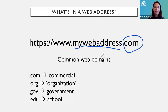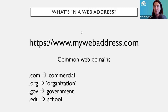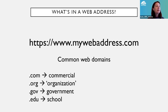Dot-com is the most common and means it's a commercial organization — it's selling you something, it's a business. Dot-org used to really mean non-profit, but now it just means it's an organization. Dot-gov means it's a government website. Dot-edu means it's from a school. So if I want super credible health information, I might be more inclined to look at a dot-gov or dot-edu site than a dot-com that might be trying to sell me something or show me ads.